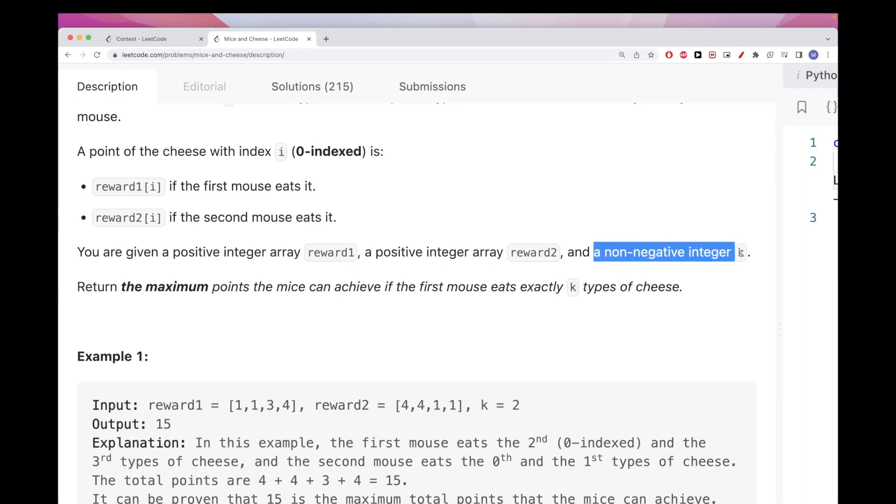We also have a non-negative integer K. What that integer means is the first mouse has to eat exactly K types of cheese. So not less, not more, exactly. That's really important here. And what we want to do is maximize the points we can achieve, considering that the first mouse here will eat exactly K types of cheese.